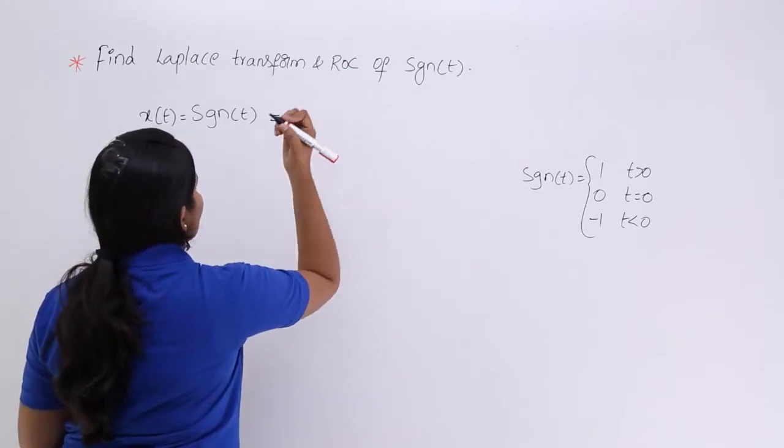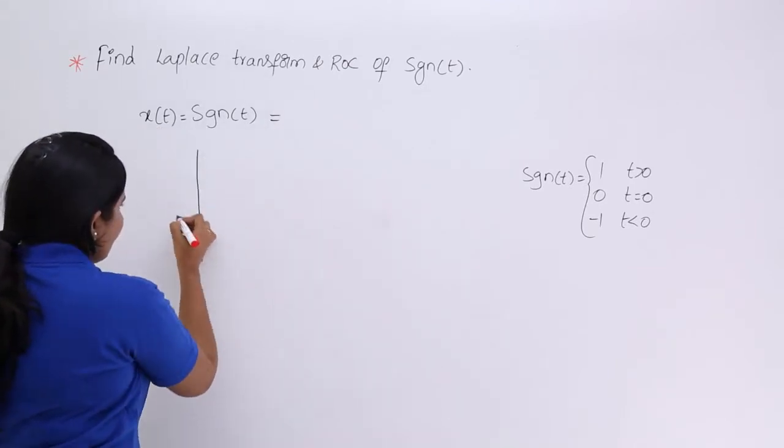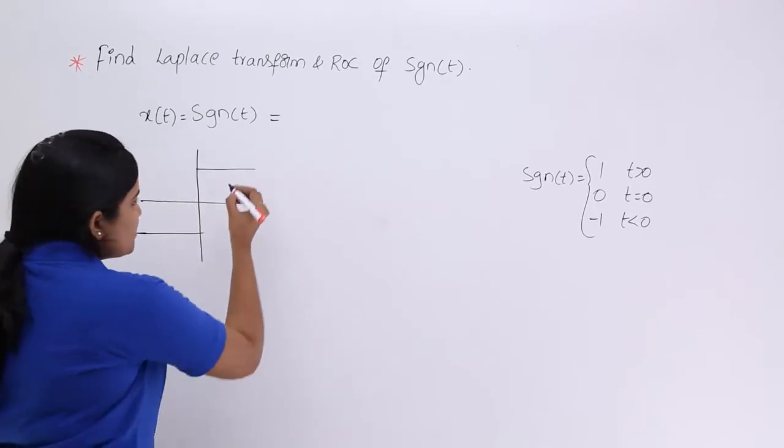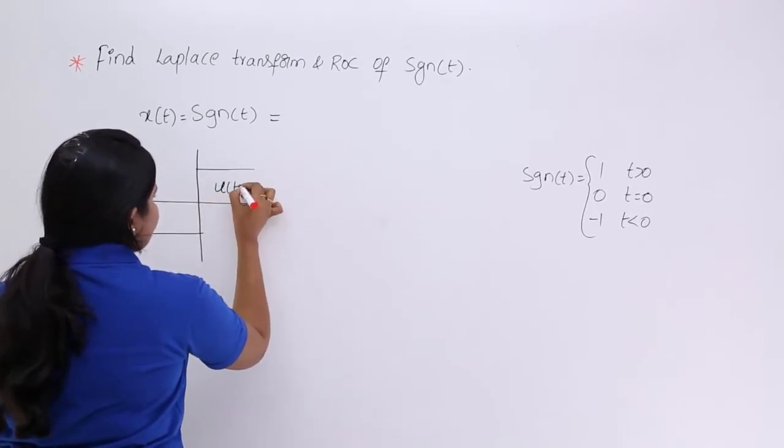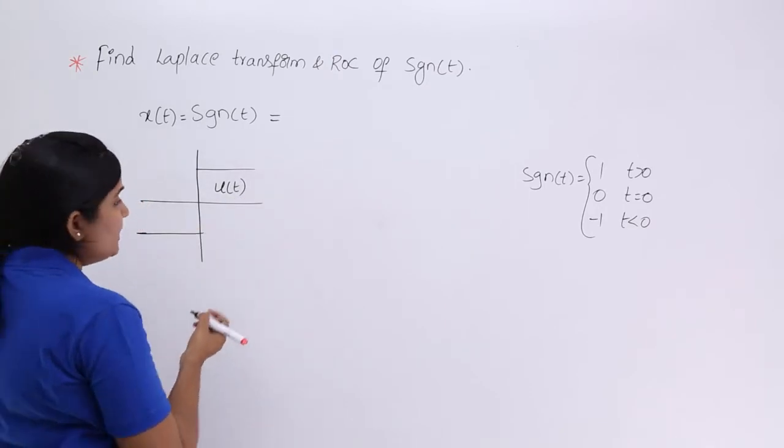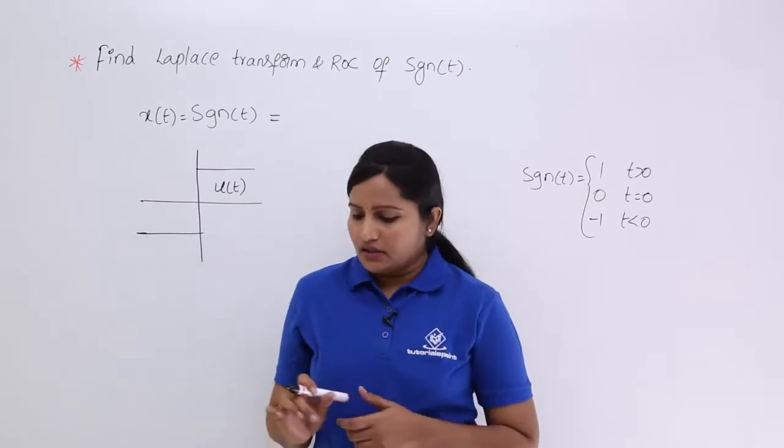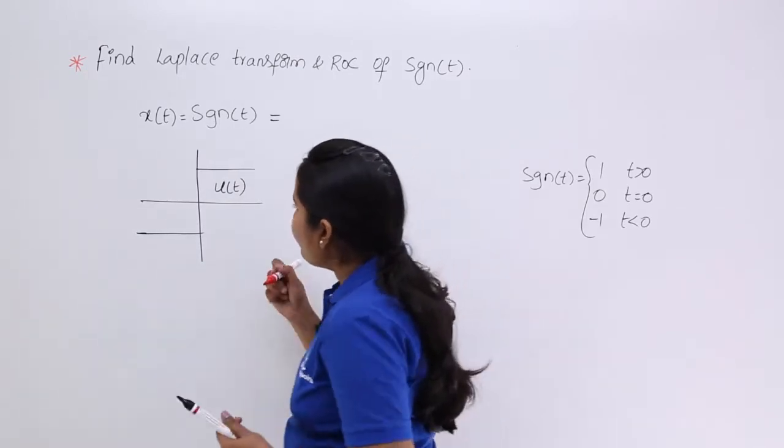Here I want to write in terms of unit step. How can we write in terms of unit step? The signum function will be like this: this is u(t), this is u(t), and this side is called u(minus t).